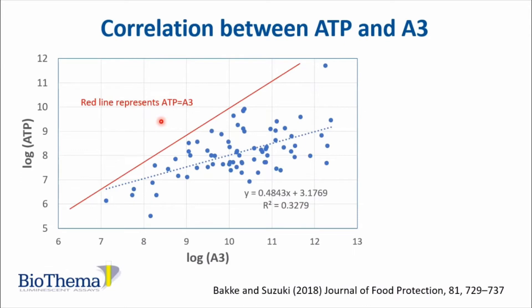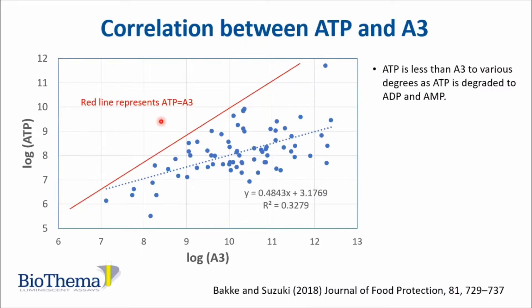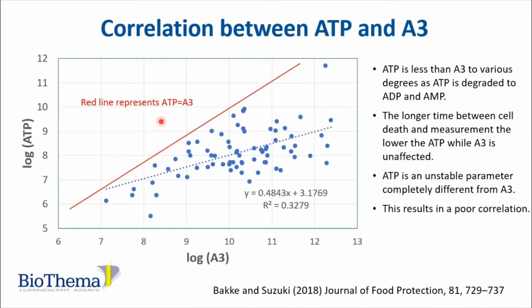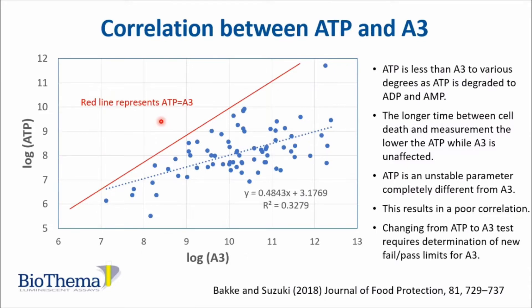The situation is completely different between ATP and A3. ATP is less than A3 to various degrees as ATP is degraded to ADP and AMP. The longer time between cell death and measurement, the lower the ATP, while A3 is unaffected. ATP is an unstable parameter completely different from A3, and this results in a poor correlation.